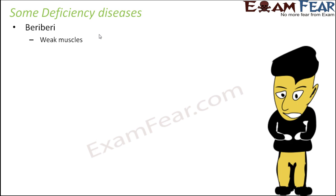Let us look at some examples of deficiency diseases. One common disease is beriberi, in which a person has weak muscles — the muscles become so weak that muscular movements don't happen at all. Beriberi is caused due to lack of vitamin B1, so if you do not have B1 in your diet, that can result in beriberi.